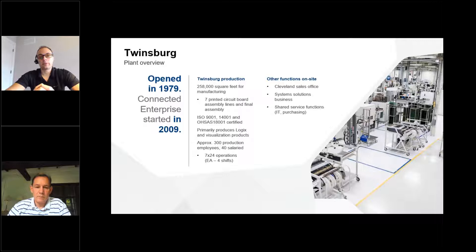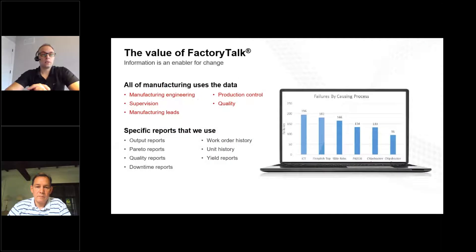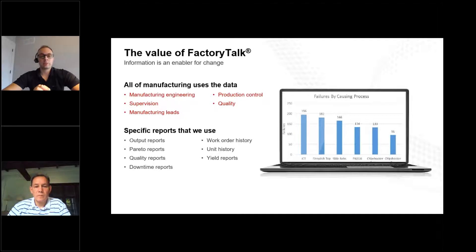In terms of our footprint in Northeast Ohio, we've got a manufacturing plant in Twinsburg, which was opened in 1979. We've got just under 260,000 square feet of manufacturing where we run 24 by 7. We've got about 300 folks on site, where we primarily focus on building our PLCs, our HMIs, our drives, and a few other medium complexity products. I'm a systems engineer supporting our internal operations, specifically around what we call the connected enterprise at Rockwell, where we're taking data from our manufacturing process, contextualizing it, processing it into useful information — all in the name of driving productivity, improving quality, and improving metrics throughout the business.